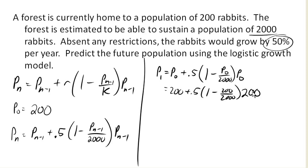Now we can evaluate this. Notice what happens here: we got 1 minus 200 over 2,000. 200 over 2,000 is 10%, or 0.1. 1 minus 0.1 is 0.9, so this is not decreasing the growth very much. If we calculate all that out, we end up with a population of 290 after one year.